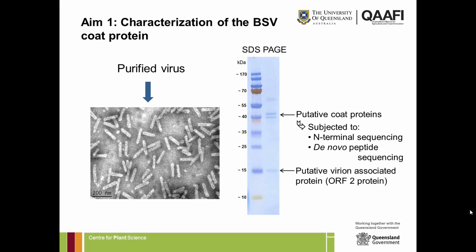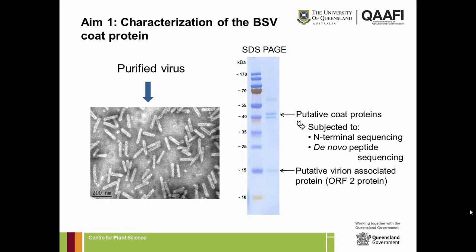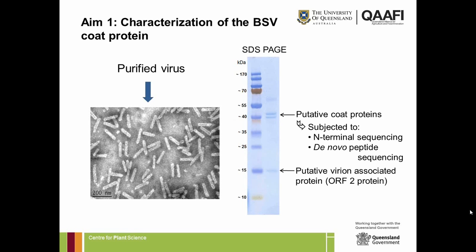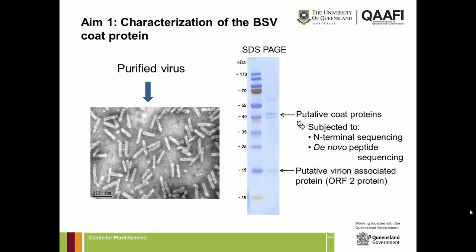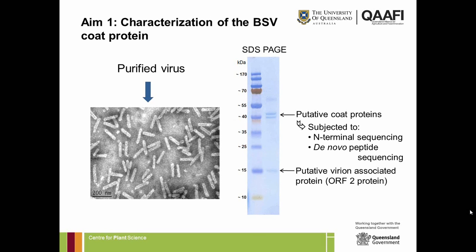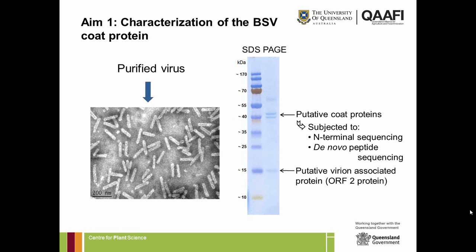She wanted to map the distribution of linear epitopes to work out new strategies for developing anti-sera and to investigate recombinant antibodies for detection. Getting really good quality virus preparations was probably the hardest part of her PhD — she had to mash up a kilogram of banana leaves. But she was able to get very pure preparations, and running the viruses on an SDS-PAGE gel she was able to identify putative coat proteins and also a putative minor virion-associated protein. That was a tremendous achievement in itself.